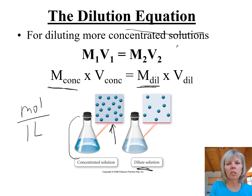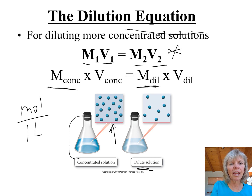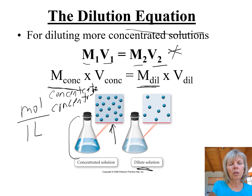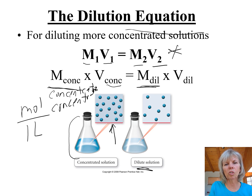The formula you need to remember is M1V1 = M2V2. M1 stands for the concentration in molarity of your concentrated solution, times the volume of your concentrated solution, equals the molarity of your dilute solution times the volume of your dilute solution.